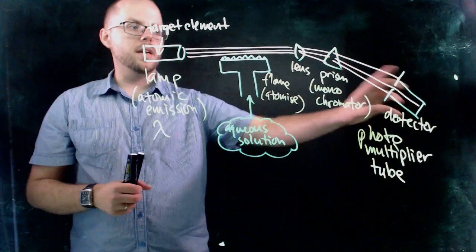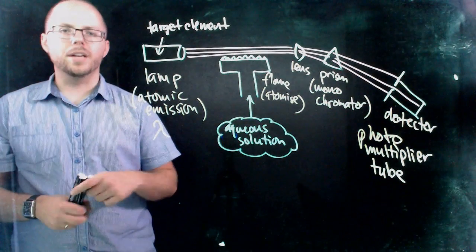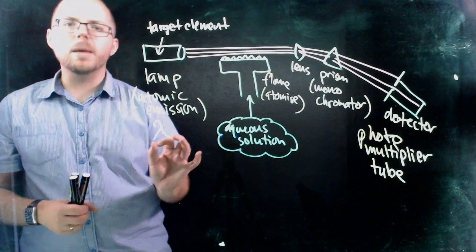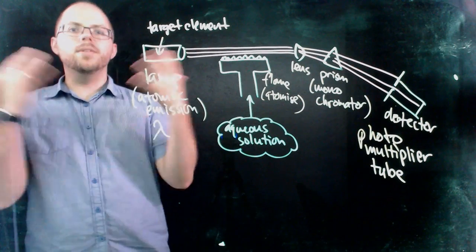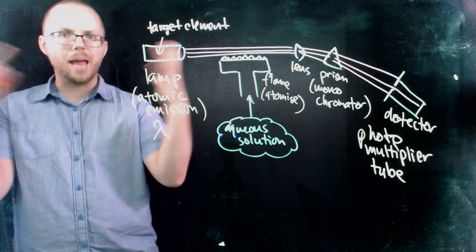Because essentially the detector that we have at the end here, our photomultiplier tube, functions like an amplifier for an electric guitar, for example. It takes the signal, the very tiny amount of signal from the vibration of the strings and then it amplifies it way up so that it's very easily heard. So it takes a tiny thing and amplifies it.